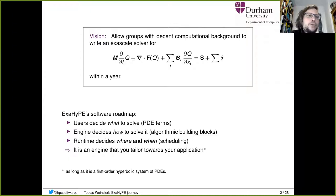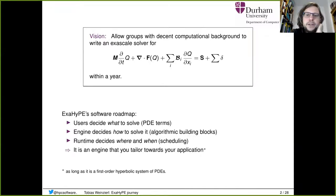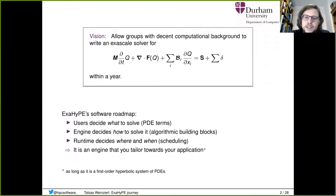We wanted to write an engine that allows groups to do that. In the original ExaHype project, we had two different user communities involved in the consortium. One group that still uses the software quite a lot is seismic simulations — where you simulate how earthquakes evolve. And the other group is astrophysics, where we are interested in gravitational waves. That research has very much moved to Durham now.